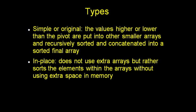The simple version of this algorithm involves you placing the higher or lower values of the pivot into new arrays, which are smaller than the original array that you're starting with, and you recursively sort and concatenate your smaller arrays into the final array which you return.